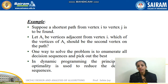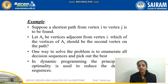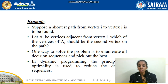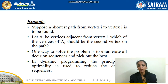For example, if we want to find the shortest path from vertex i to vertex j, suppose A_i is the set of vertices adjacent from vertex i. In order to find the shortest path, we won't be able to find the right second vertex to pick from that set if we take only one decision at a time. So we will find all possible solutions and pick the best. The principle of optimality is used to reduce the decision sequences — we find n number of decision sequences and select the best solution.